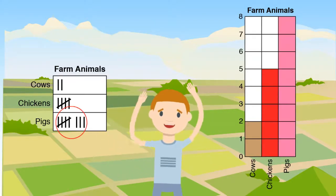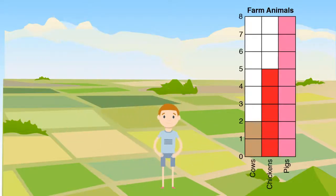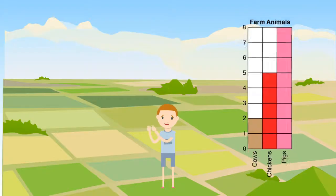We can shade in eight spaces above pigs. Bar graphs also do a great job with showing data. We can easily see that my friend has more pigs than chickens and more chickens than cows.